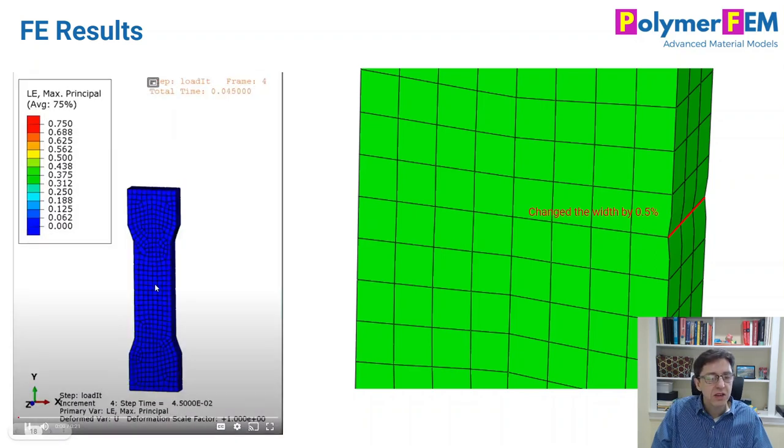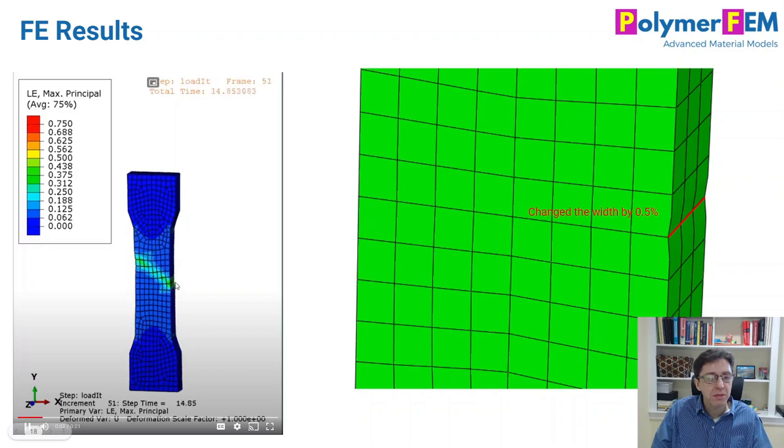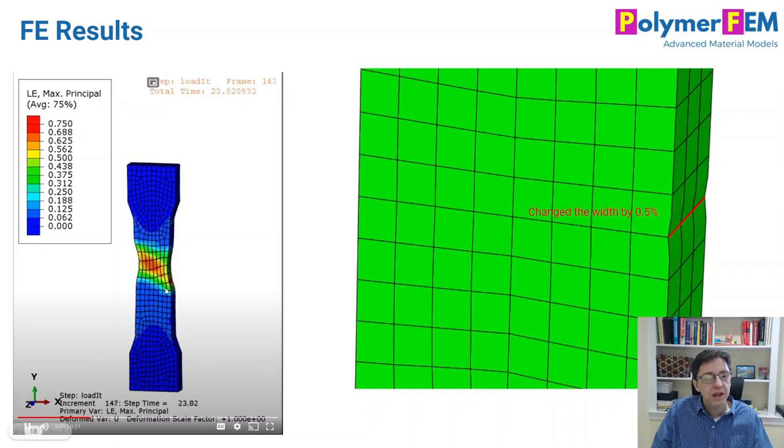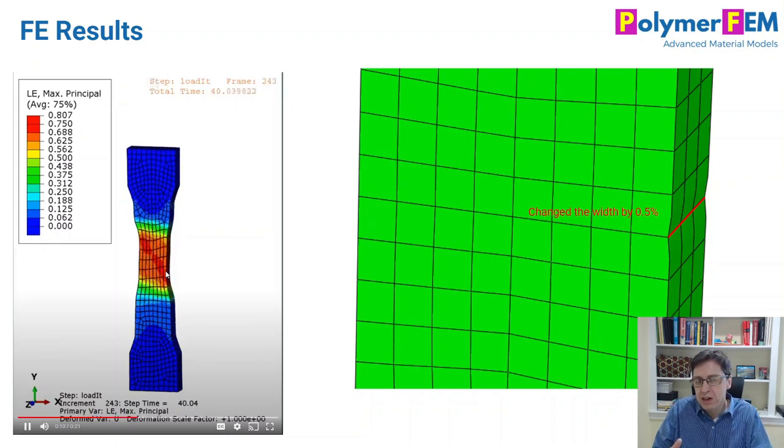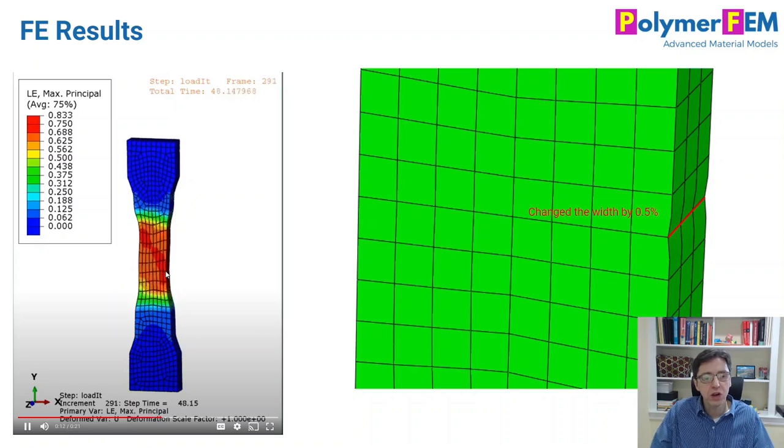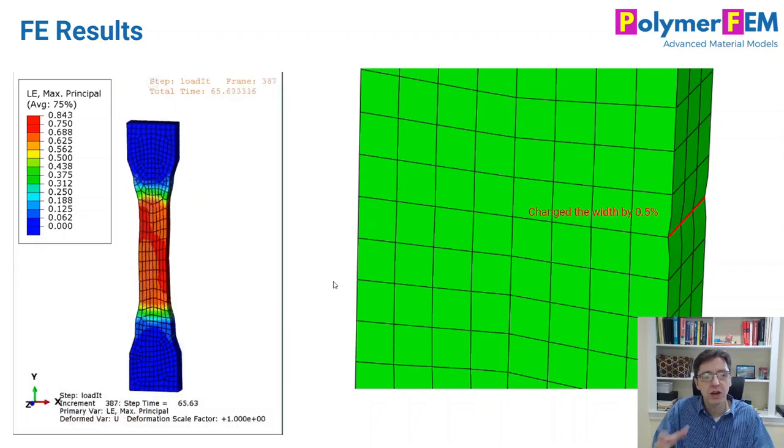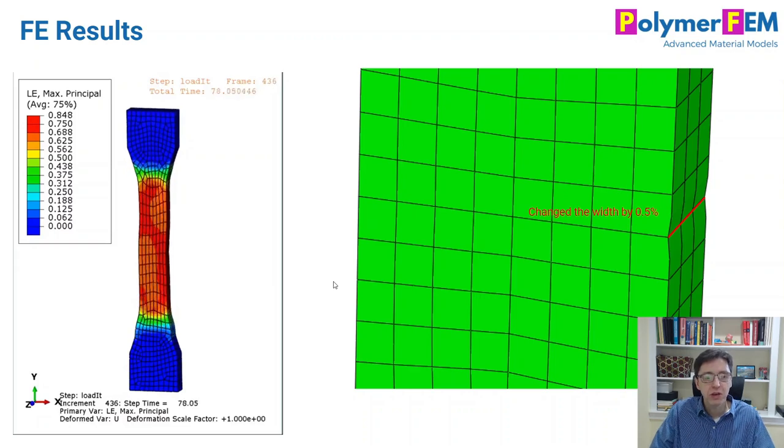The thinking is that should cause the neck to occur in a known location. You can kind of see that here in the simulation. I have a defect in the middle. Yes, indeed, we see the neck propagate starting there. We see a 45 degree kind of angle, which is how this likes to evolve initially.